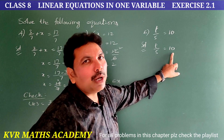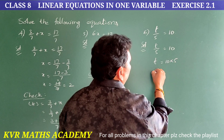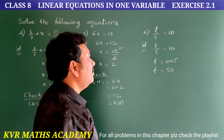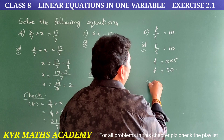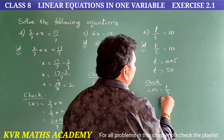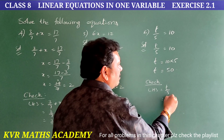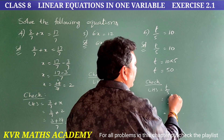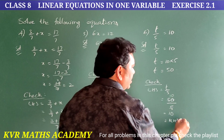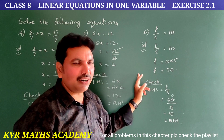Sixth solution. Given: T/5 equals 10. Here 5 is dividing T, so transposing gives T equals 10 into 5 equals 50. Check: LHS equals T/5 equals 50/5 equals 10, which equals RHS. Therefore the solution is T equals 50.